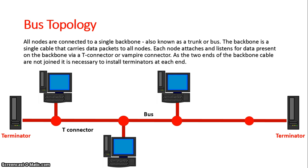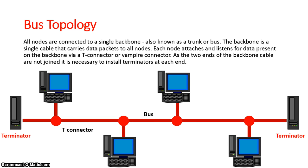These T-connectors, basically, if they go down, the device will no longer be connected to the network. But if the entire bus line is cut at any point, the whole network will go down.